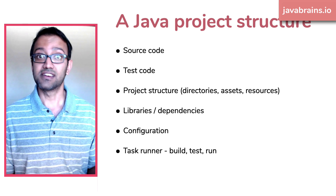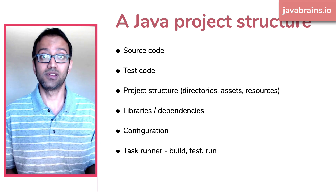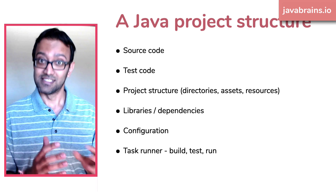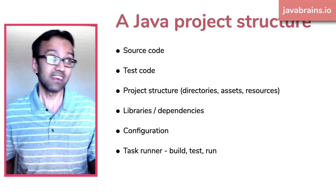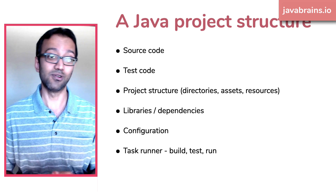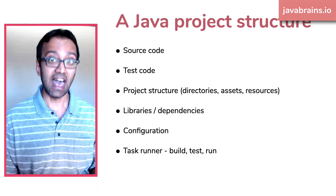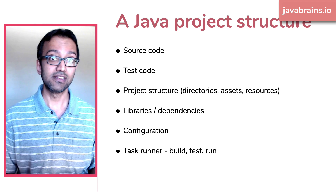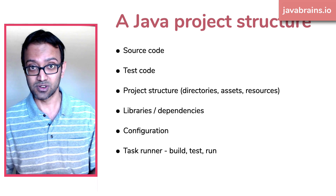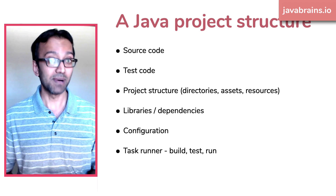Then you have task running. You give somebody a Java folder with all the Java files and they'll say, what do I do? How do I run this thing? You have to tell them: run these commands, this is how you compile it. Your project might have 10 or 50 classes — you have to compile all of them, then test and run. You need the ability to run these tasks in a uniform way, so that all 10 people working on the project are running the same commands for building, testing, and compiling.